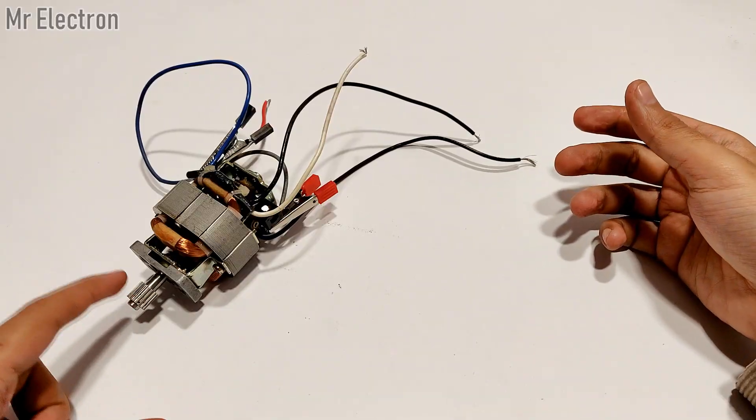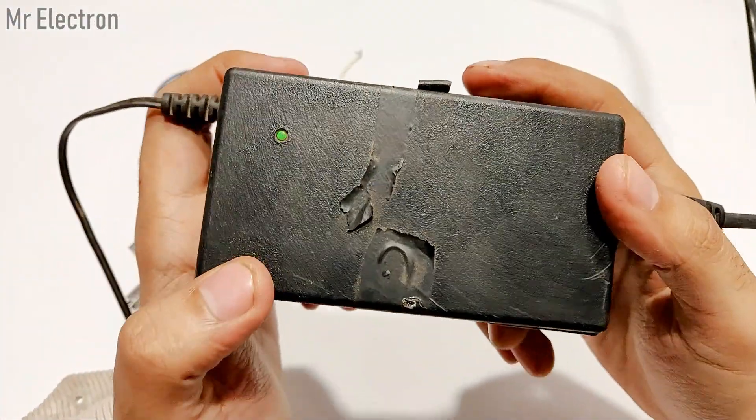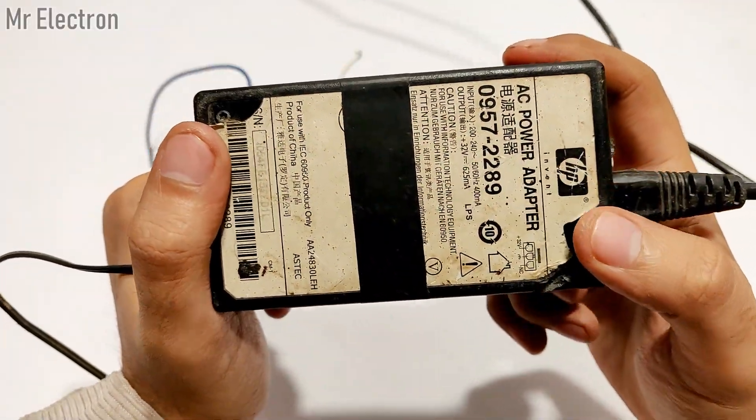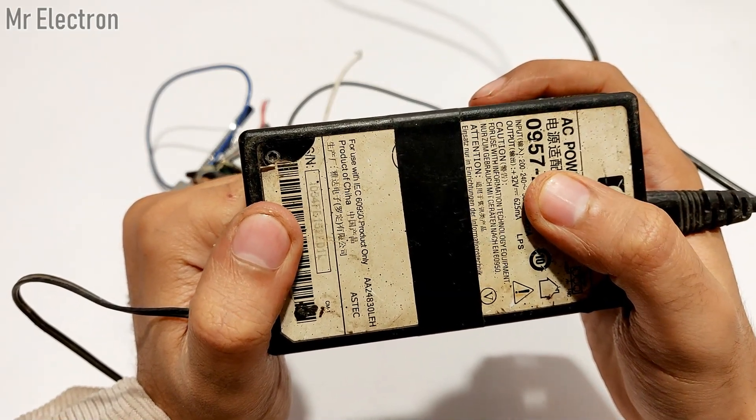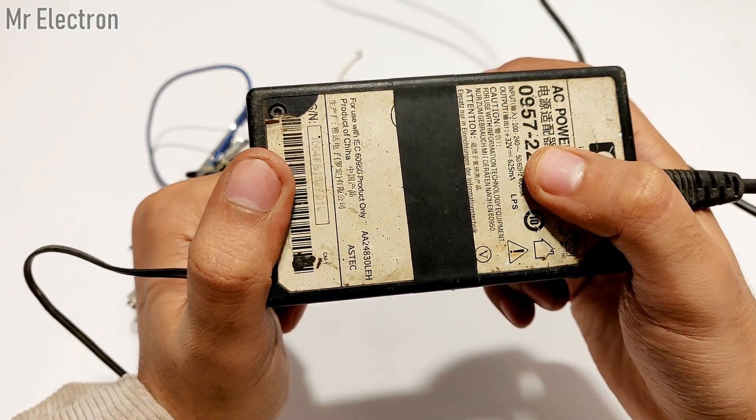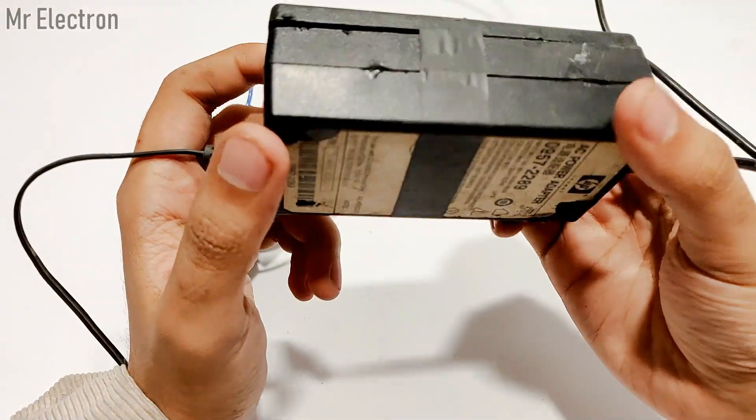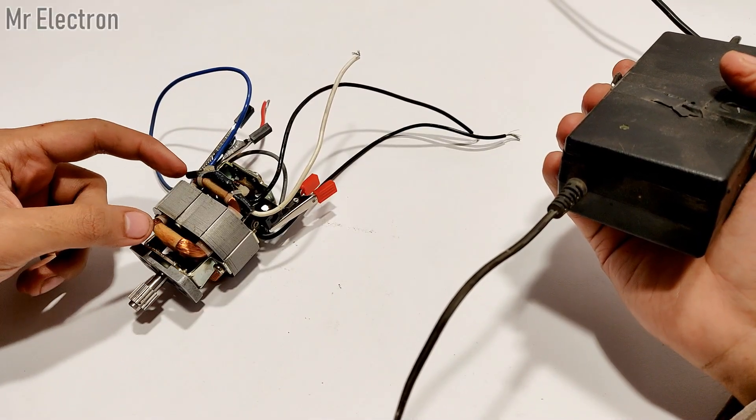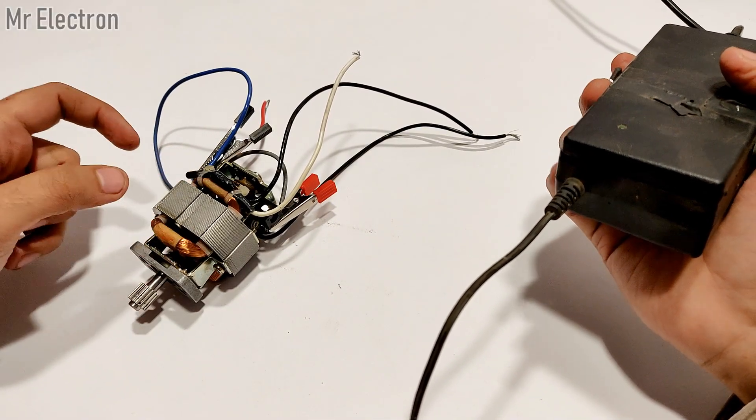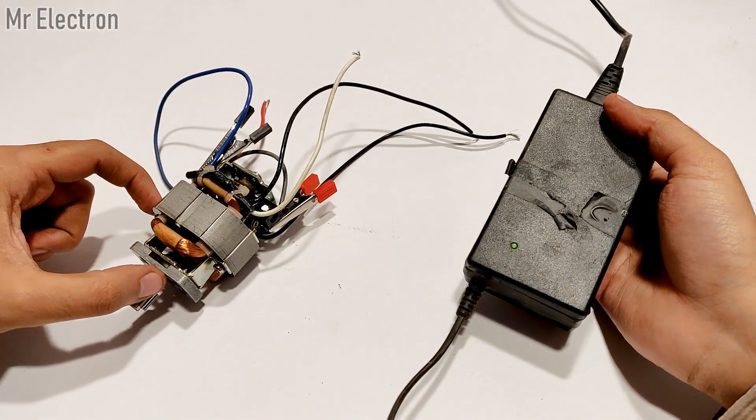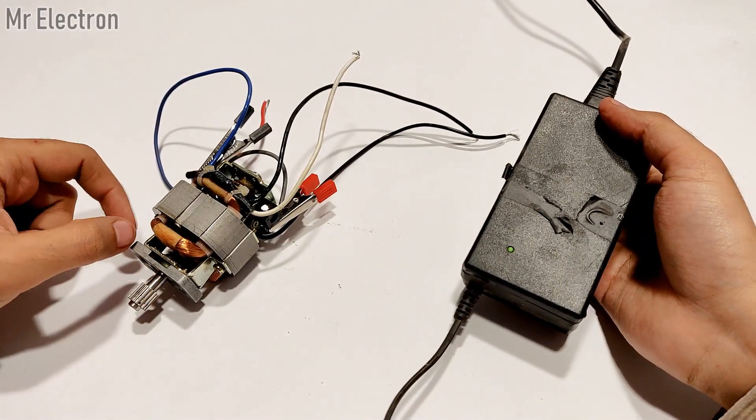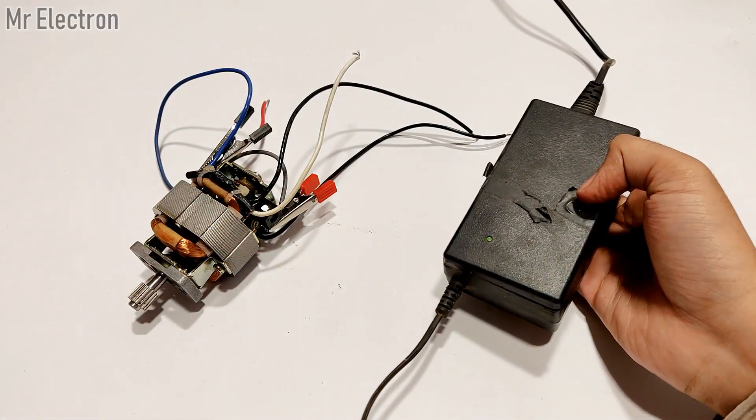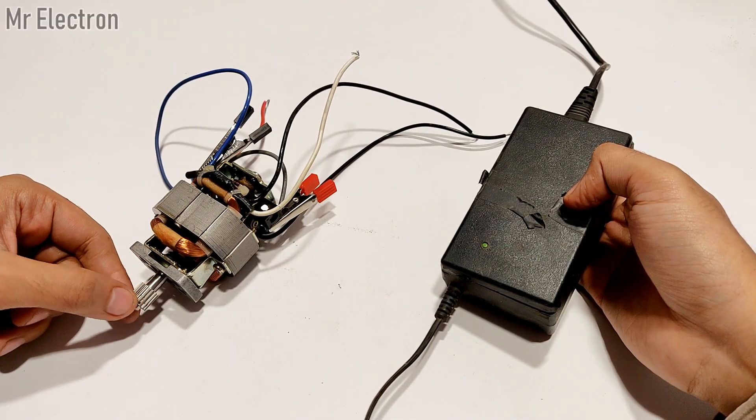I'm going to use an HP printer power supply. The output is 32 volts and only 625 milliamperes. These universal motors usually require high voltage because of the high resistance, since all the windings are connected in series. They're designed to operate at 220 to 230 volts, and I'm going to operate it at just 32 volts, so it will operate slowly.